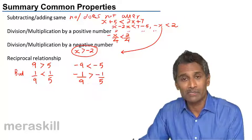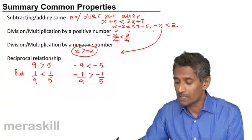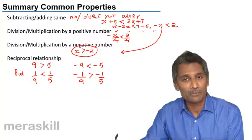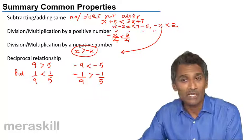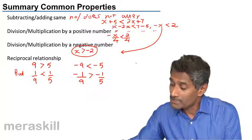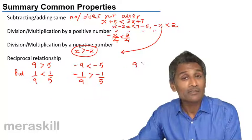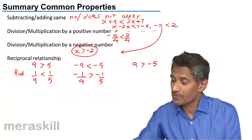So hence when both the numbers are positive or both the numbers are negative, when we take the reciprocals, the reciprocals have an opposite relationship in the equation. But let's take this case: 9 greater than minus 5.